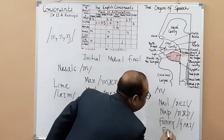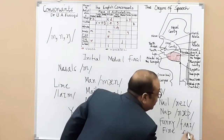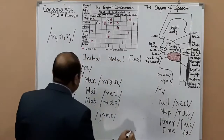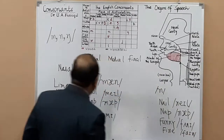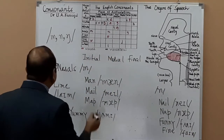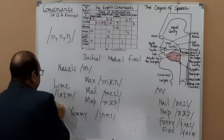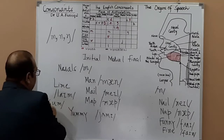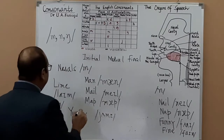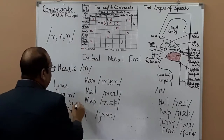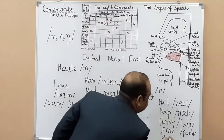For the final position you can have 'lime', and a rhyming word: 'fine' — as far as the diphthong is concerned, we have the same diphthong here. And you may have 'some' — /m/ is occurring at the end: 'some'.